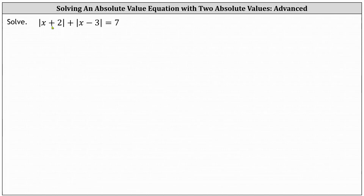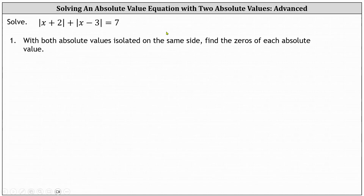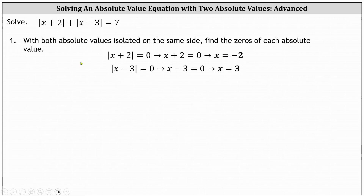We want to solve the given absolute value equation. This absolute value equation is fairly challenging — notice we have the sum of two absolute values equals seven. For the first step, with the absolute values isolated on one side of the equation, we begin by determining the zeros of the absolute values. The absolute value of x plus two equals zero when x equals negative two, and the absolute value of x minus three equals zero when x equals three.